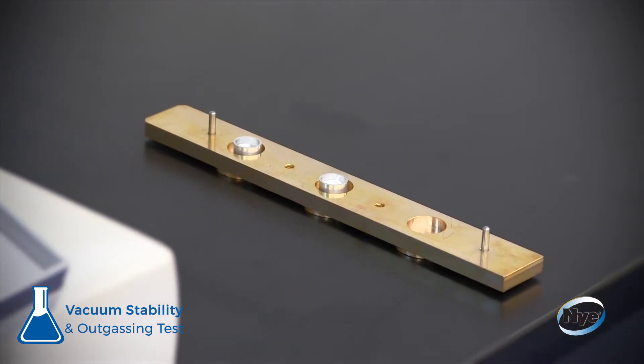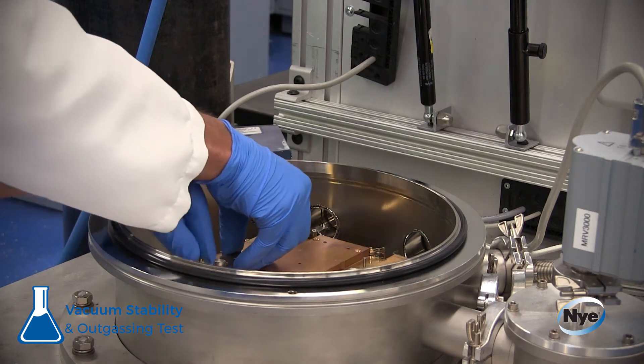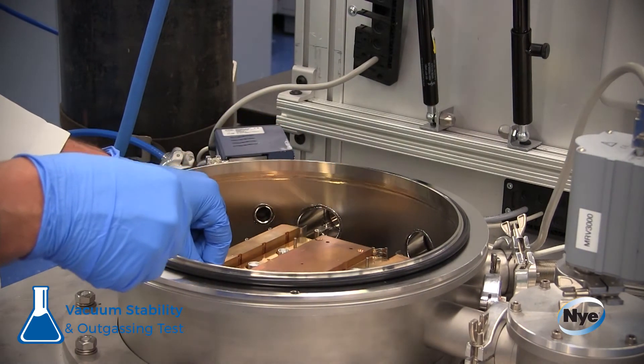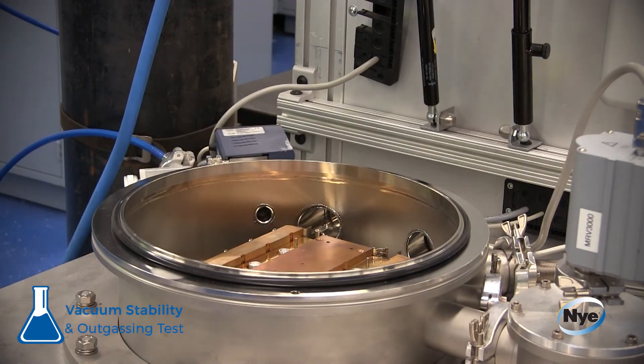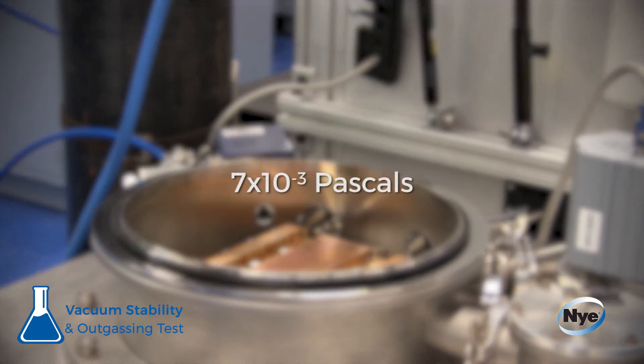The typical test can run up to two different materials at a time. After all the samples are weighed and loaded into the chamber, it is then evacuated to a vacuum level of at least 7 times 10 to the negative 3 pascals or 5 times 10 to the negative 5 torr.